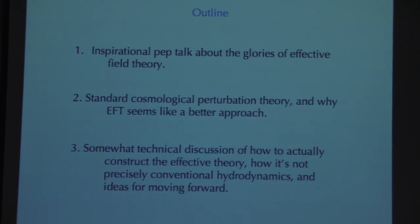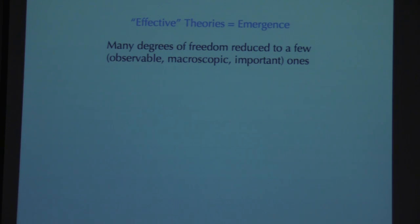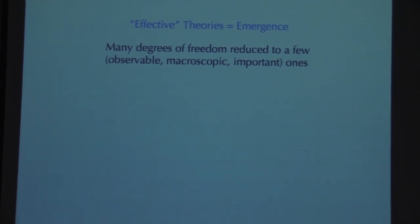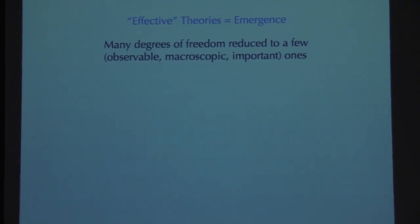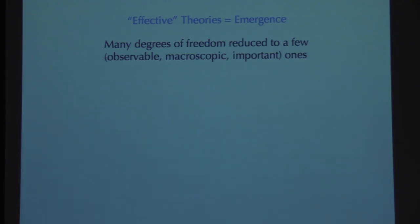Effective theories are just the word that field theorists like to use for what is really the very broad idea of emergent descriptions of phenomena on large scales. It very often happens in physics that you have a system with an enormously large number of degrees of freedom, but nevertheless we can make tremendous progress by ignoring them. The actual interesting dynamics collapses to a small submanifold of the phase space, and a smaller number of variables captures all the interesting behavior within some regime. That is called emergence in the general literature, and effective field theories are just a particular approach to that.